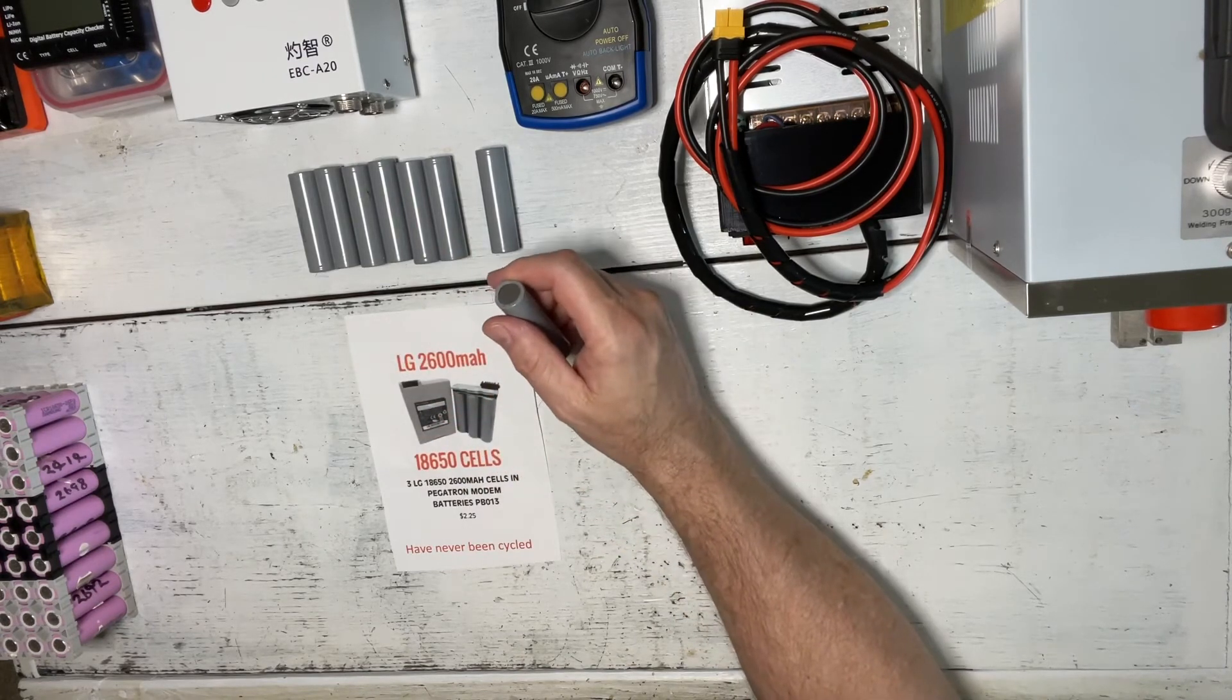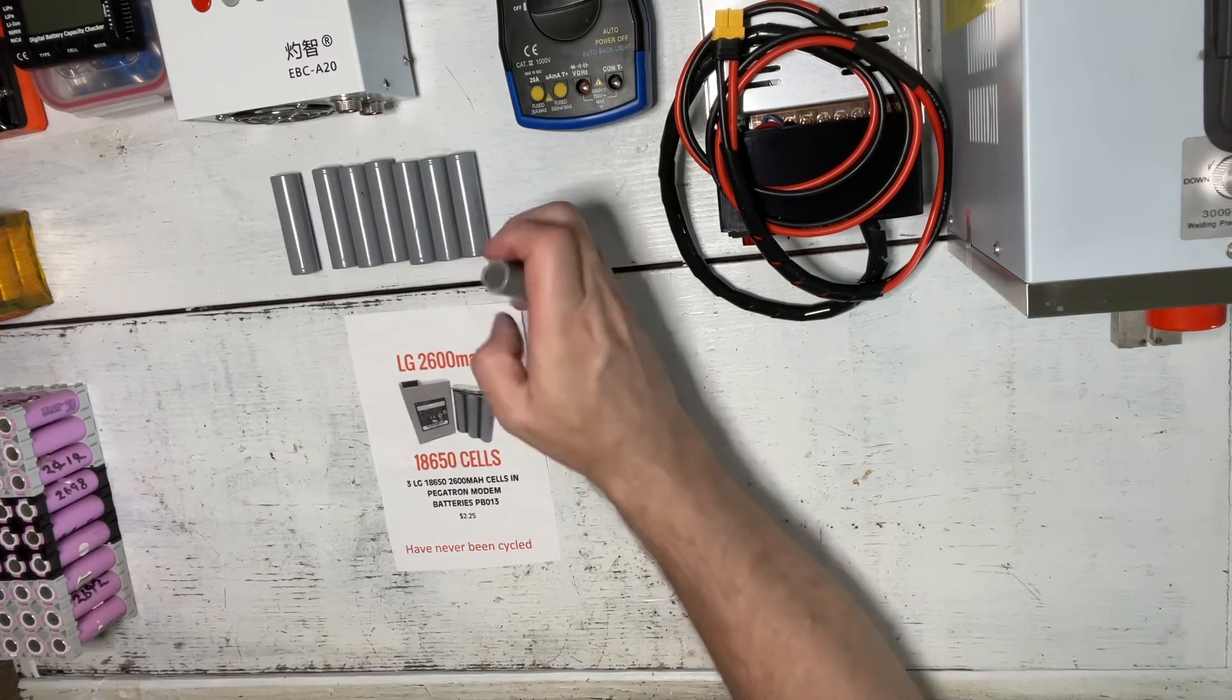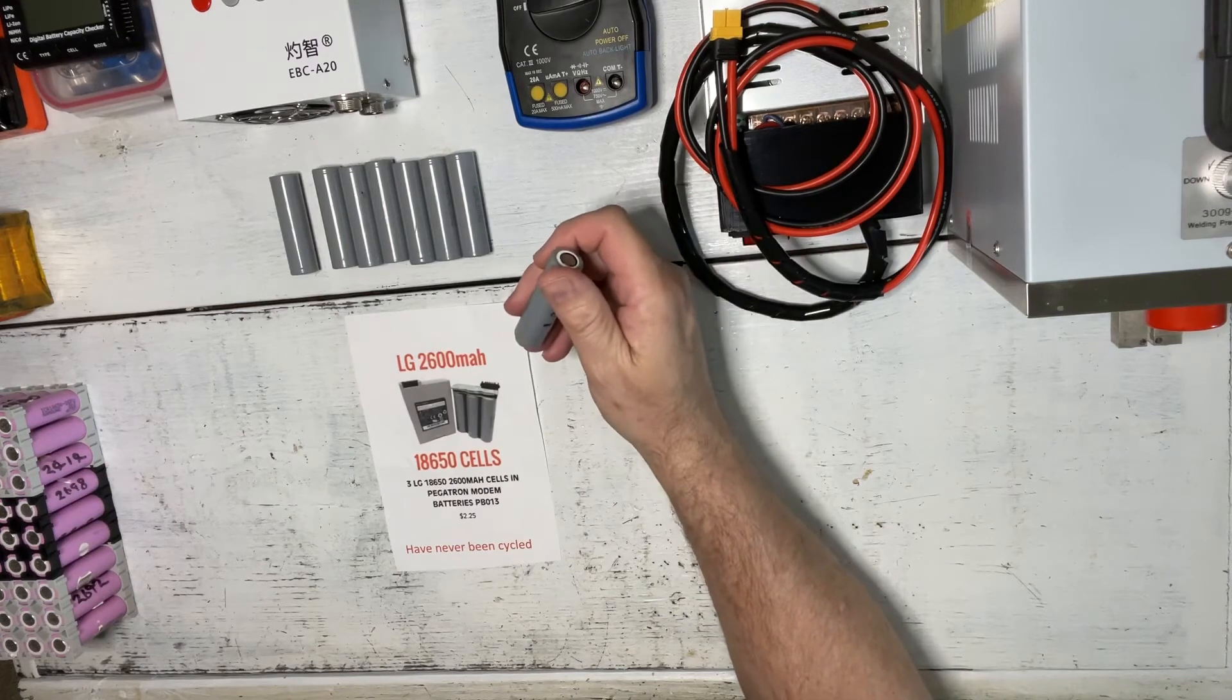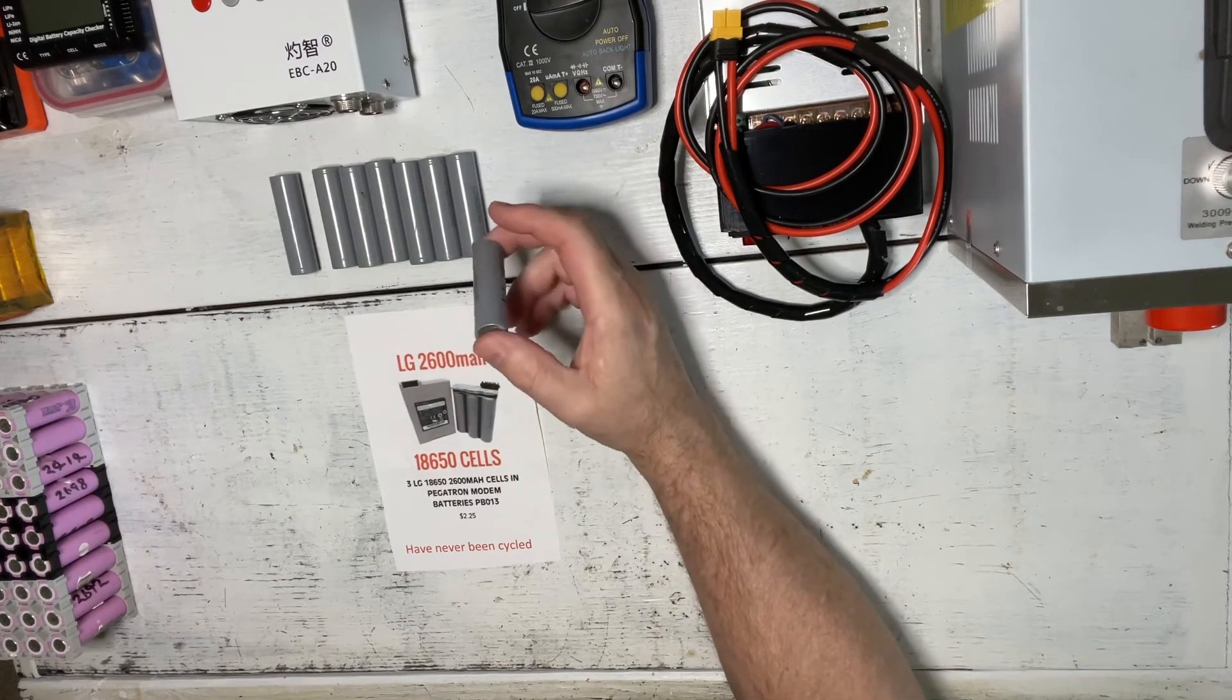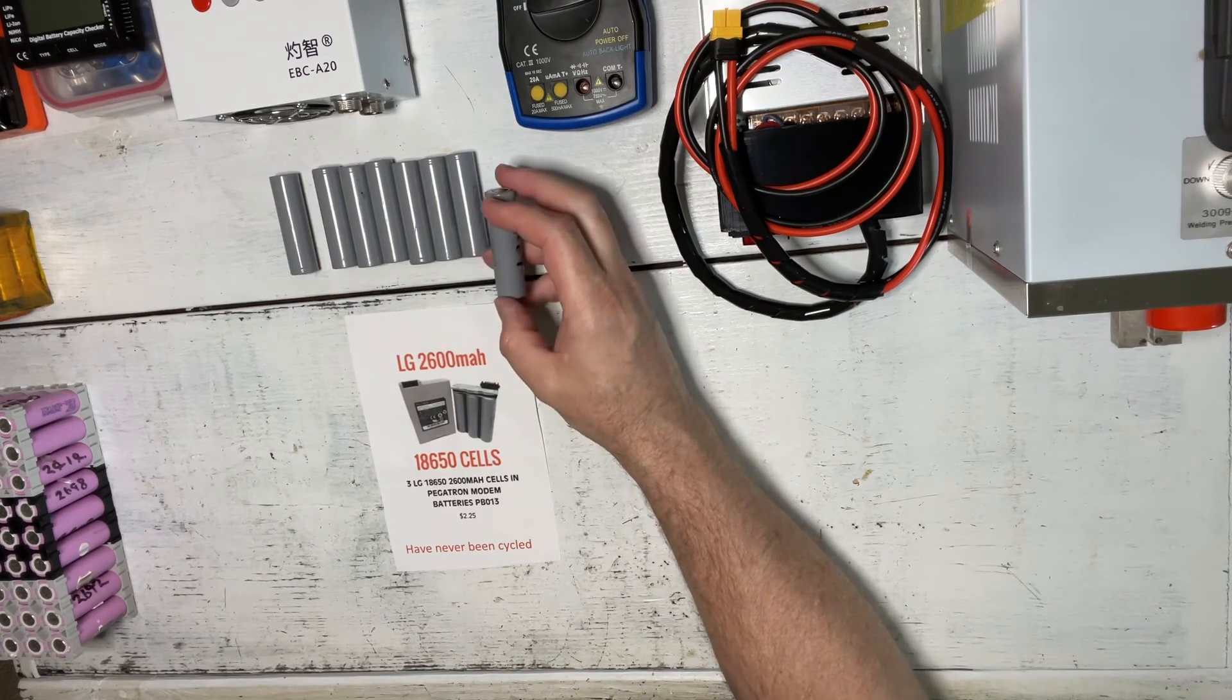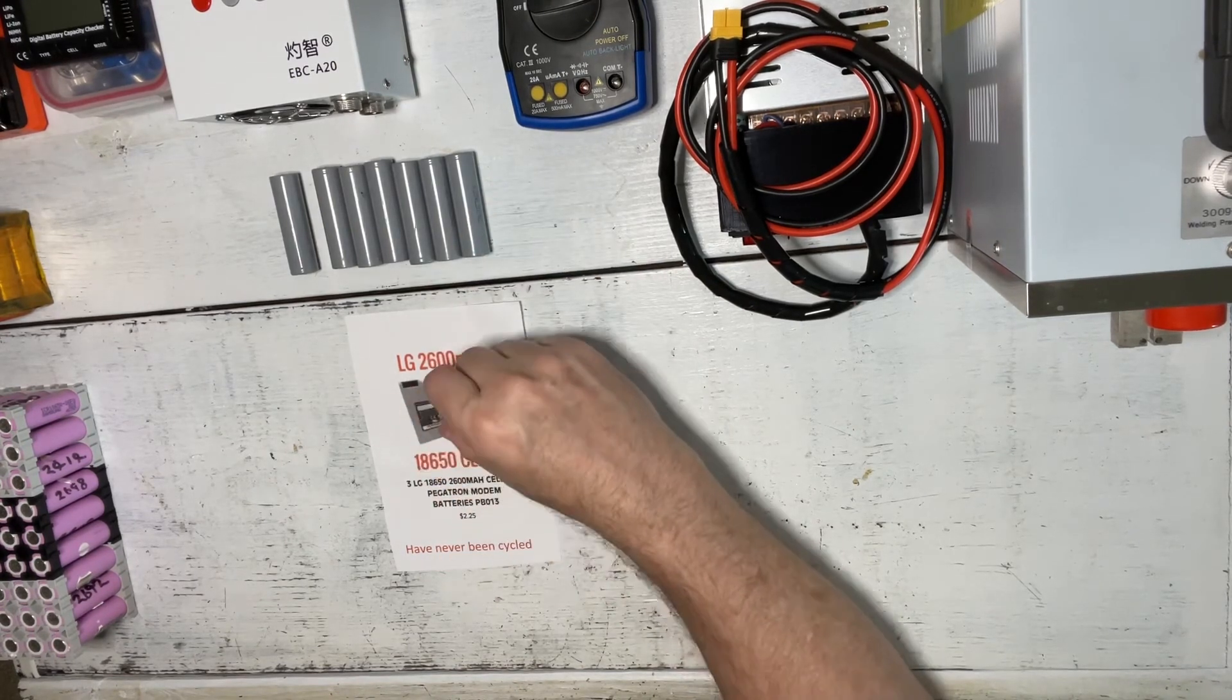So number one rule for me when I'm buying any 18650 battery packs so I can break them down to pull out the cells is just this: have never been cycled. If you stick by that one rule when you're buying the battery packs, you will do good with your batteries. They're all different capacities, but if you just do that, you will get new cells.